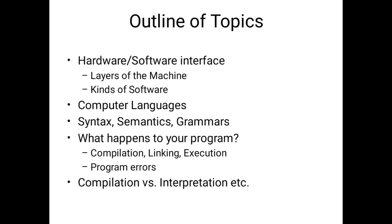The topic is hardware and software interface — the layers of the machine. We know what hardware and software are. Components of a computer system include hardware and software interfaces and applications we install into the system. We have two categories of software. We are also going to learn about computer languages and what languages are available, syntax, semantics, and grammars. We will cover what is compilation, what is linking, and what is execution, and how to find program errors and get the output of your program.